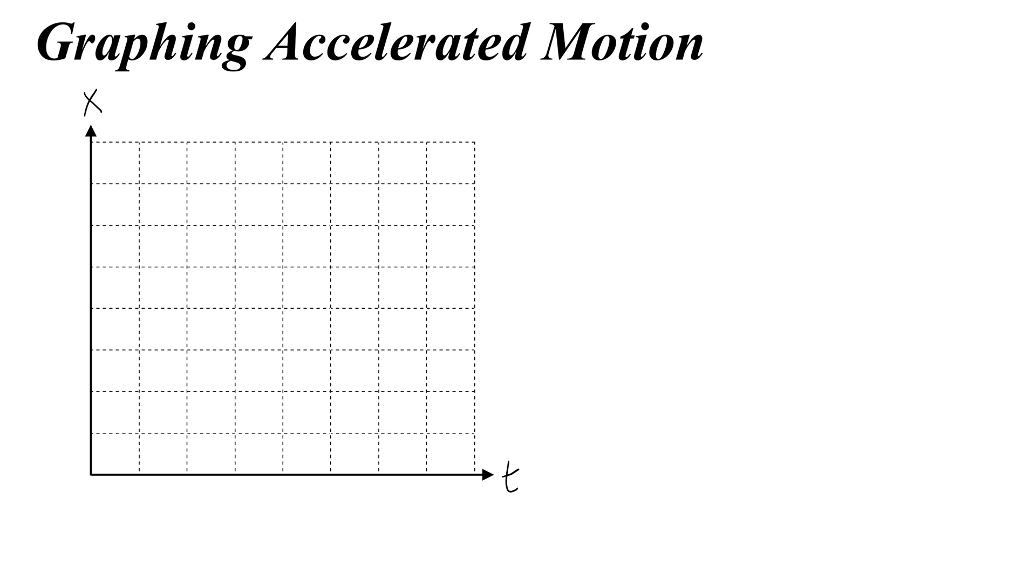We're going to start with our position equation, which is x equals half of the acceleration times time squared plus the initial velocity times time plus the initial position.